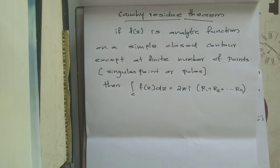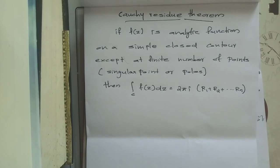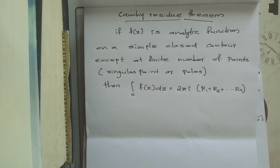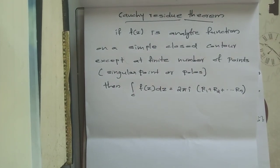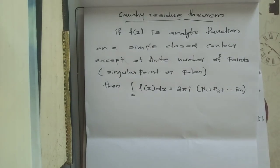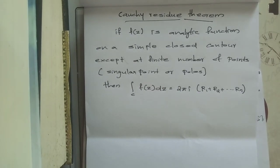Today we will look at what is Cauchy's Residue Theorem — it is a useful method to solve complex integrals. The definition is: if f is an analytic function on a simple closed contour except at a finite number of points, called singular points or poles, then the integral over the closed contour C of f(z) dz is equal to 2πi times (R1 + R2 + ... + Rn), where R1, R2, etc. represent the corresponding residues of the singular points.